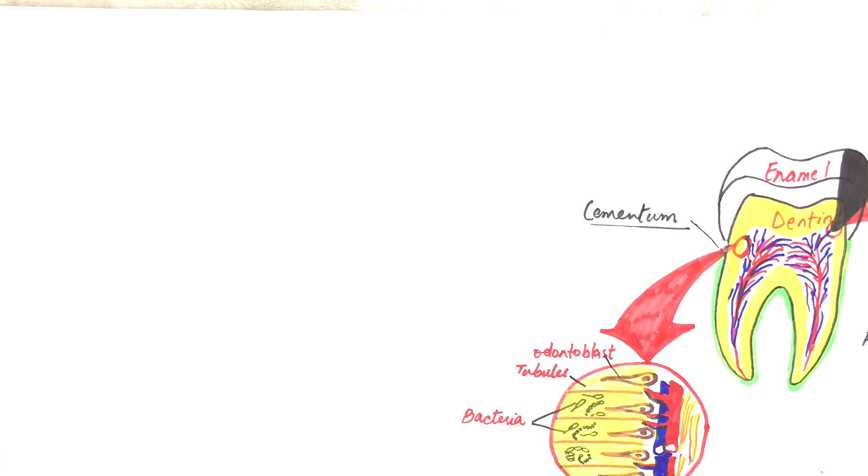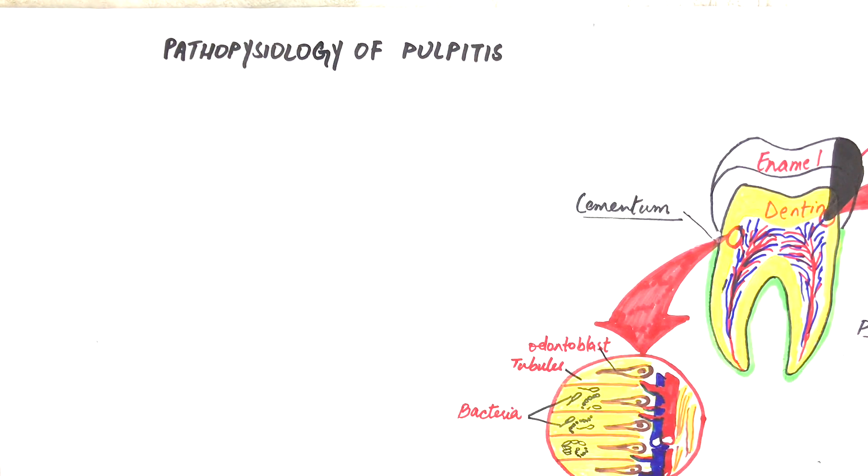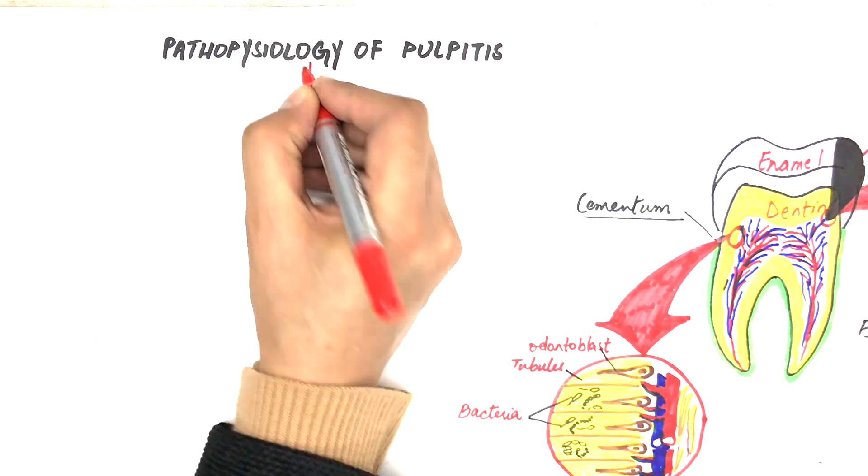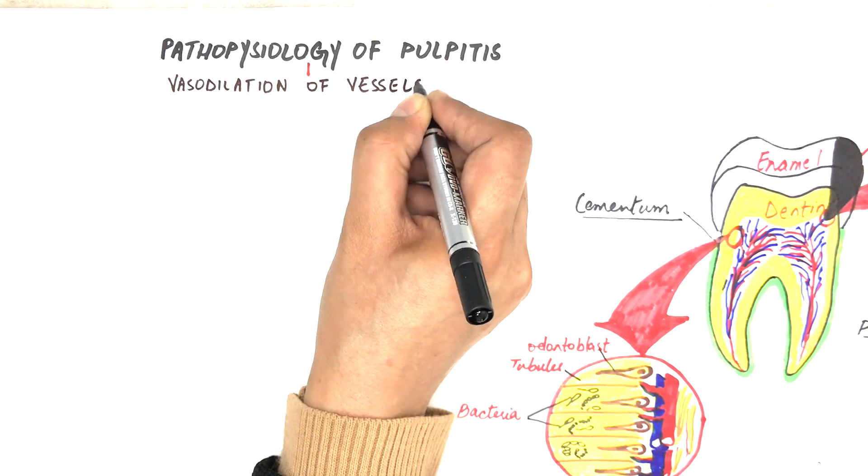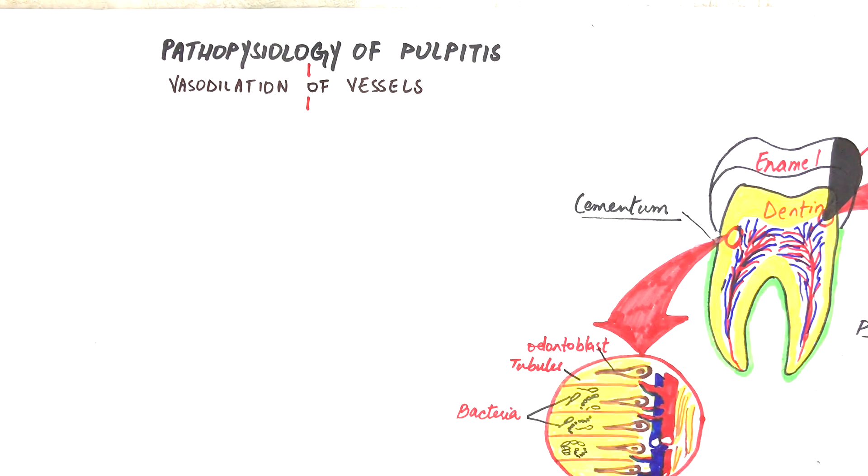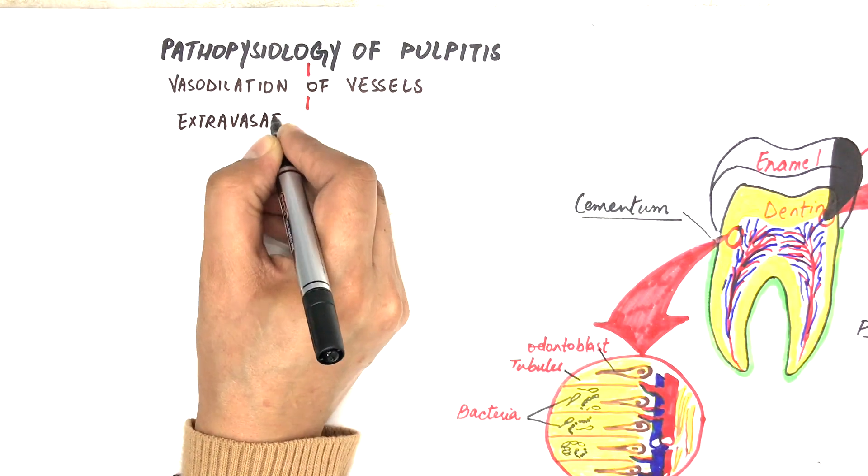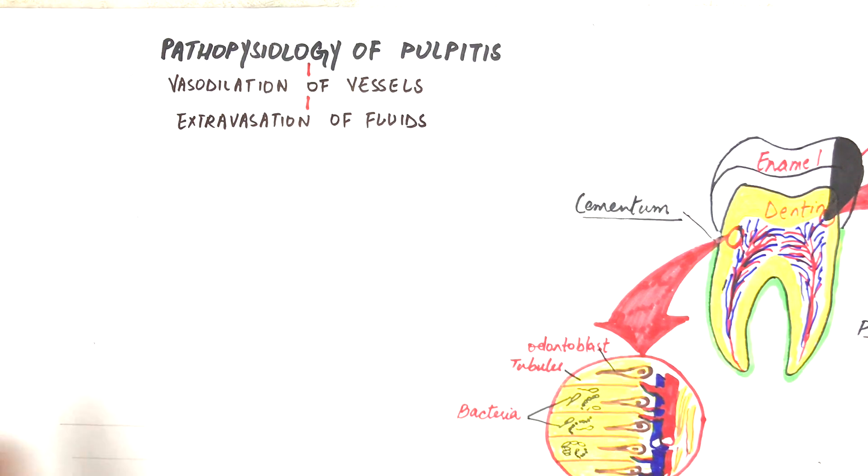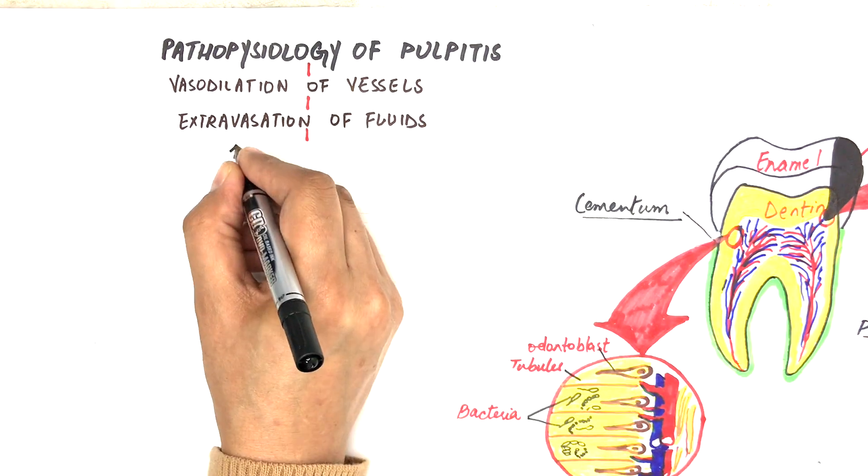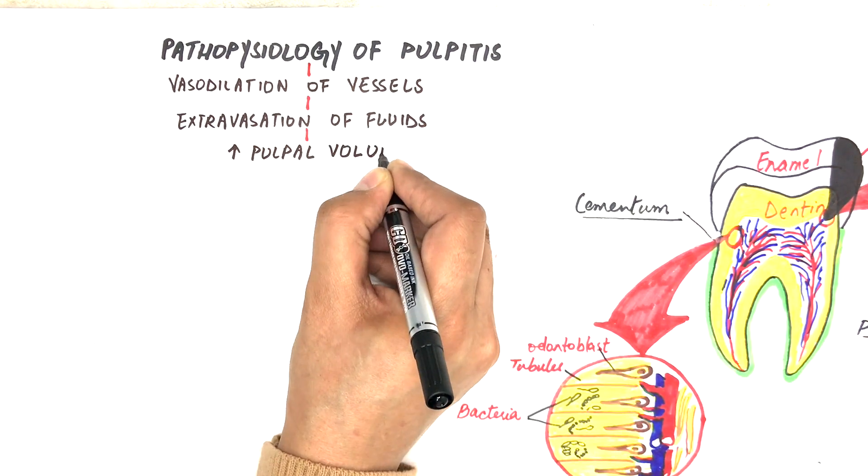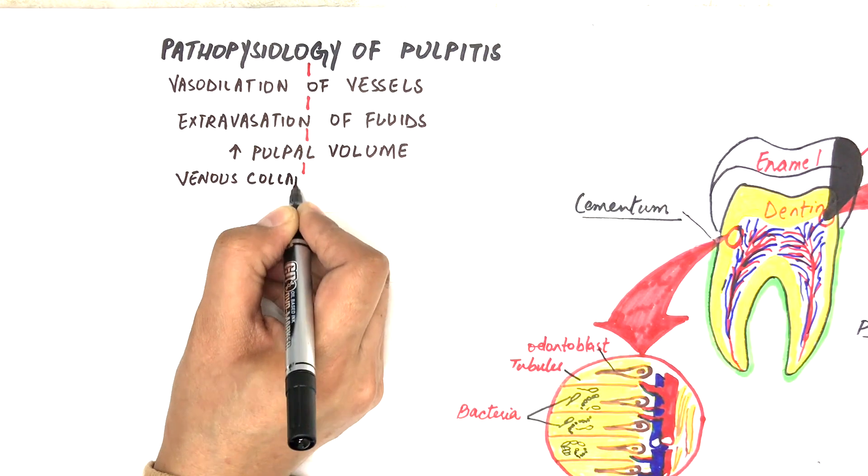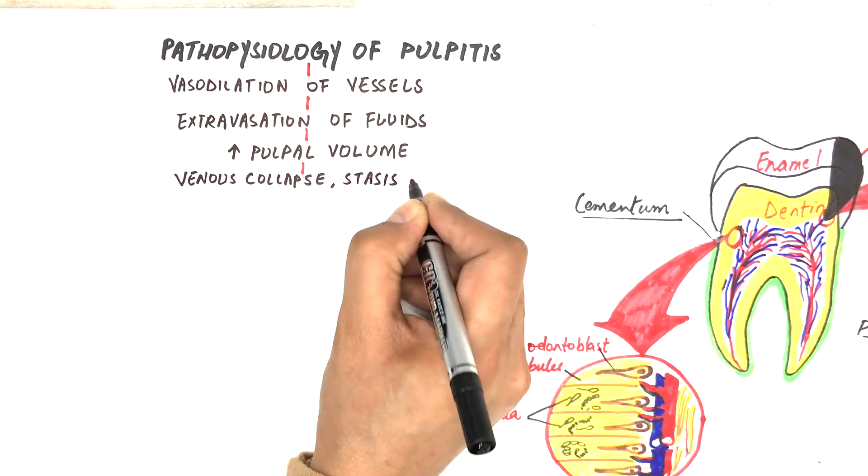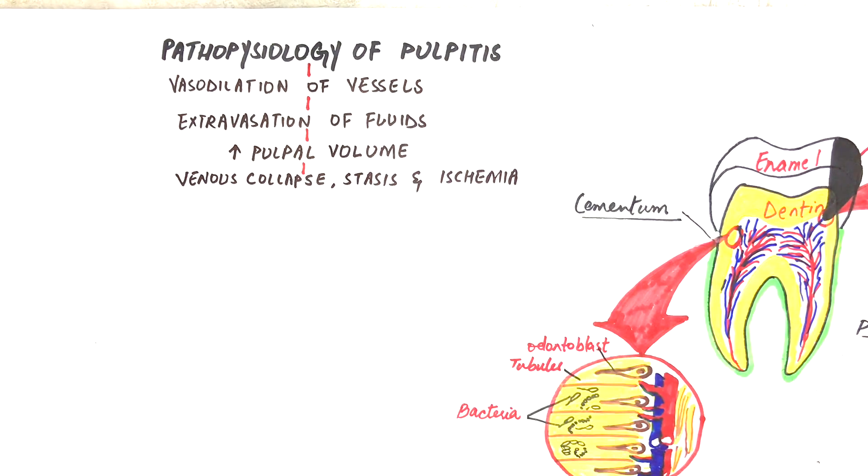Let's have a look at the pathophysiology of pulpitis. Inflammation of the pulp, just like inflammation anywhere in the body, is characterized by vasodilation of blood vessels and extravasation of inflammatory fluids and infiltrates, leading to an increase in pulpal volume. This increase in pulpal volume in turn leads to compression of vessels causing venous collapse, stasis and ischemia of the pulpal tissue, eventually causing necrosis.